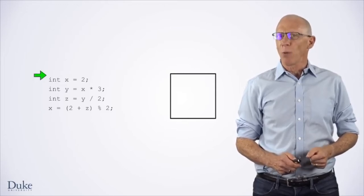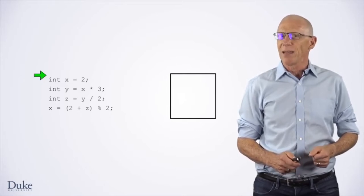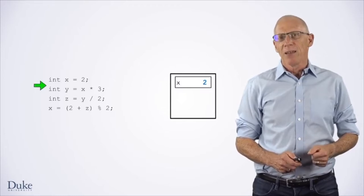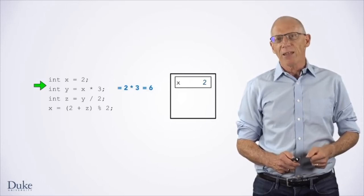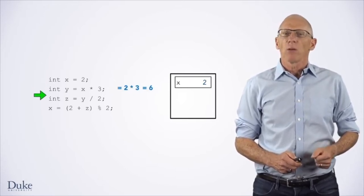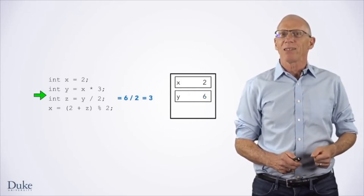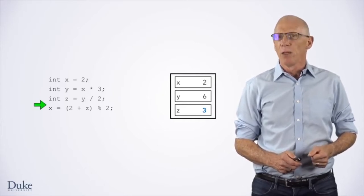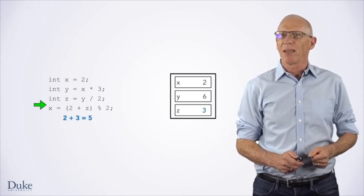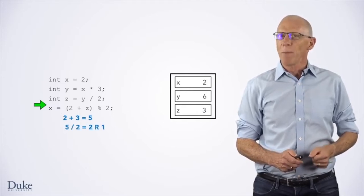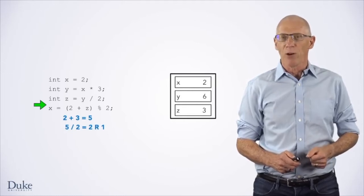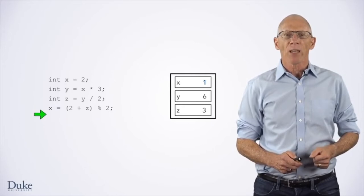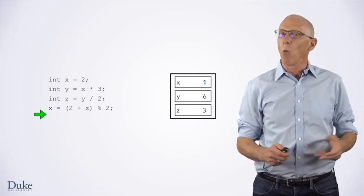Before we work through the next example, take a moment to pause the video and see if you can figure out what values x, y, and z have at the end of this code fragment. Let's step through it: first, we declare and initialize x. Next, we evaluate x times 3, which is 6, and initialize y to that value. Next, we compute y divided by 2, which is 3, and initialize z to that value. The last statement says x gets (2 plus z) mod 2. Since 2 plus z is in parentheses, we compute that first and get 5. Next, we compute 5 mod 2 — 5 mod 2 means we divide 5 by 2 but take the remainder, not the quotient — so this expression evaluates to 1, and we update x's box to be 1. Now you should be able to evaluate code involving a wide variety of mathematical expressions.